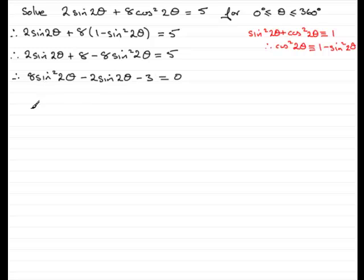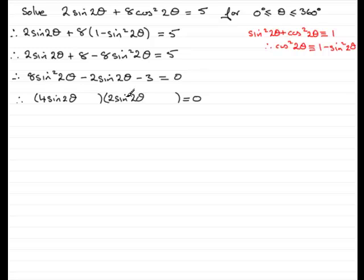Now I'll try factorizing this — and it does factorize. If it didn't we could always use the quadratic formula. We get (4sin(2θ) − 3)(2sin(2θ) + 1). Checking: 4sin(2θ) × 2sin(2θ) = 8sin²(2θ), and the cross terms give 4sin(2θ) − 6sin(2θ) = −2sin(2θ). The constant product −3 × 1 = −3. ✓